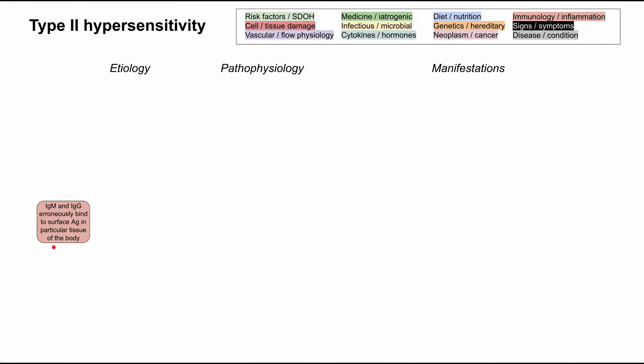For type 2 hypersensitivity, you have a more localized effect affecting one or two organ systems, as opposed to type 1 hypersensitivity or allergic reactions, where you might have a more systemic presentation — a more systemic anaphylaxis, or swelling, or redness, or rash, or hives. This will be more localized, affecting one or two organ systems, and we'll see many examples when we get to manifestations.